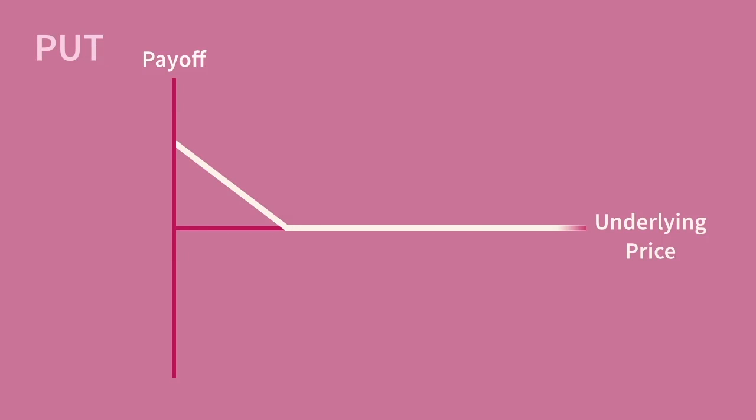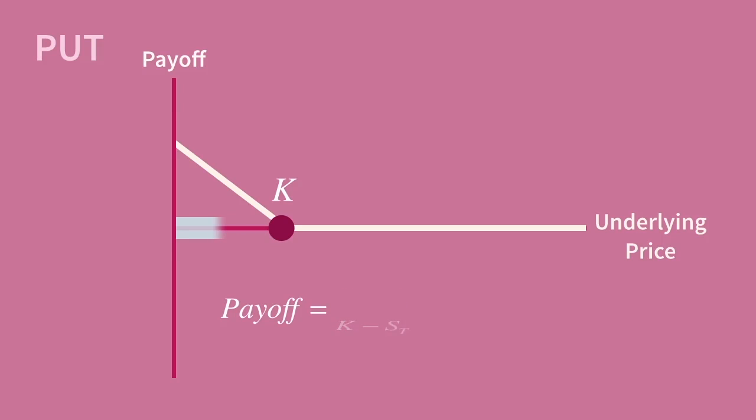With a put, value is dependent on being able to sell with the option for more than we can sell in the market, so we want the strike price to be higher than the underlying price. Again, the kink in the curve marks the strike price. The lower area represents where the underlying price is below the strike, meaning the option has some value — we can sell at the strike where the market would give a lower price. In the upper range, the underlying market price is higher than the strike, so we could sell in the market for more than by exercising the option, meaning the option has no value.